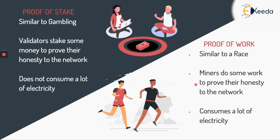Also, imagine the running race example — five people are running. Why are they all running? To get the reward. But only one person wins. When only one person wins the race, the other four people ran for nothing. They will not get a reward. They are not hackers, they are not trying to confuse the system, but still they are spending their electricity. Only the first person who finishes is rewarded and the others are left behind. So that is not a very good or efficient system.